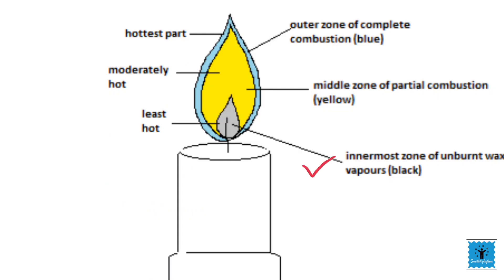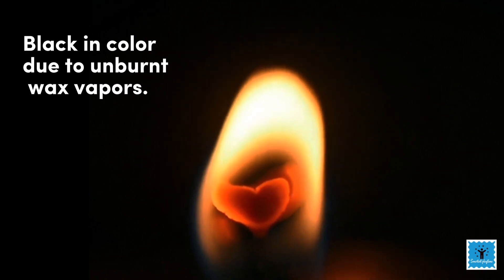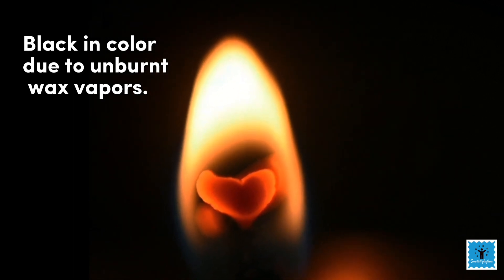Then comes the innermost zone. The innermost zone of the flame is the least hot and is black in color. It is black in color due to the presence of unburnt wax vapors.